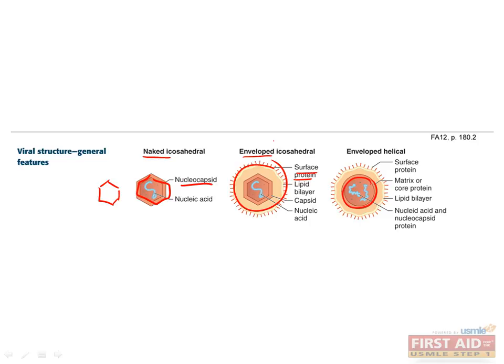The viral envelope is composed of lipoprotein membrane and acquired from the host plasma membrane during the virus's non-lytic release from the host. Exceptions are the pox virus, which acquires its envelope from the Golgi in the cytoplasm, and herpes virus, which acquires its envelope from the nuclear membrane. The envelope contains virus-encoded glycoproteins, which give the virus its ability to attach to host cells and initiate infection. The glycoproteins also stimulate antibody production by acting as antigens.